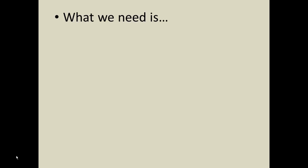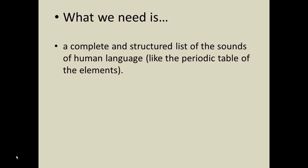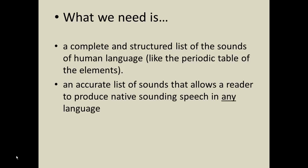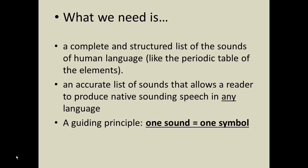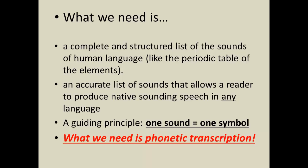It's clear that if we want a system that's consistent and easy to use, English spelling is just not going to cut it. If we're serious about capturing the sounds of language — and we are — we need a more appropriate alphabet. This alphabet should be a complete list of language sounds, analogous to the periodic table of the elements, accurate enough to allow a reader to produce native-sounding speech in any human language. The guiding principle is simple: each sound has a single, unique symbol — one sound, one symbol. This would allow us to transcribe any language phonetically — an international alphabet for speakers of any language. What we need is phonetic transcription.